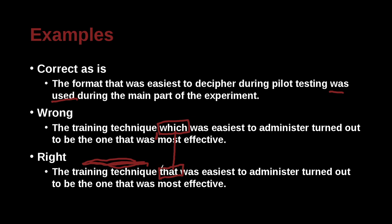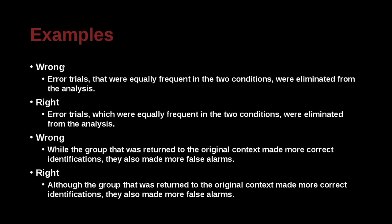More specifically, 'that' makes it very clear that this specific thing was easiest. When you use 'which,' it's much less clear — is it this thing or part of some other group? For example: 'Error trials that were equally frequent in the two conditions were eliminated from the analysis' versus 'Error trials, which were equally frequent in the two conditions, were eliminated from the analysis.' Here we have a comma, so you must use 'which' and not 'that.'